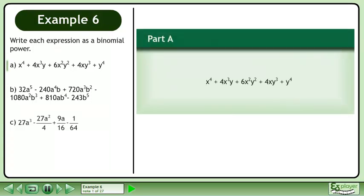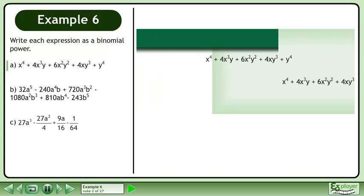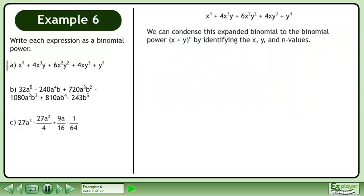Write each expression as a binomial power. In part A, write the expression shown as a binomial power. We can condense this expanded binomial to the binomial power x plus y raised to the power of n by identifying the x, y, and n values.